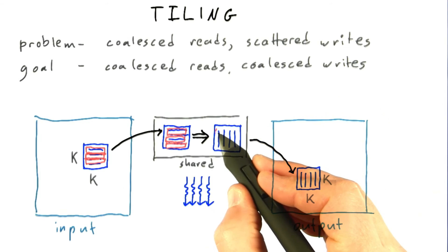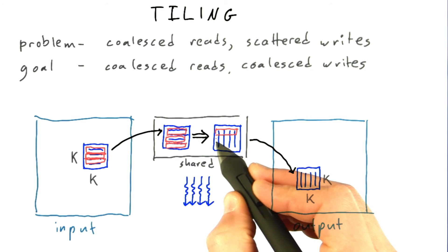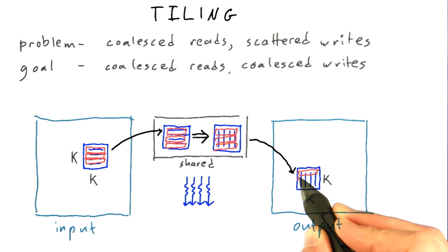And then when you copy the transposed matrix to its new location in global memory, you can once again do it in a coalesced fashion.